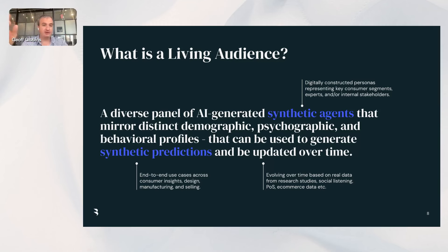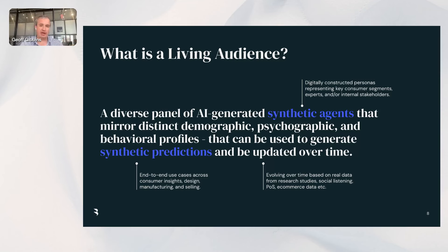The last piece is the 'living' aspect. The idea is that a living audience can actually be updated over time. Whereas a static segmentation has a data capture stage followed by the segmentation and materials, a living audience is a live model where — based on new data that emerges, whether from research studies, social listening integration, point of sale data, e-commerce data, or whatever it might be — you can actually update those personas and make them more relevant as they evolve over time.